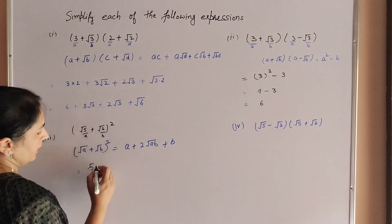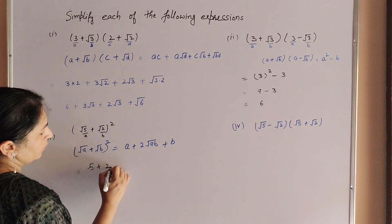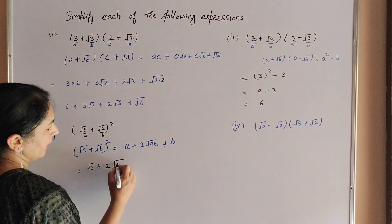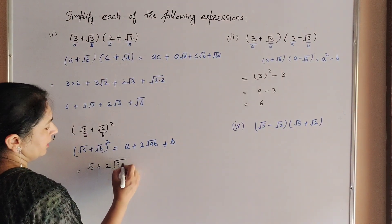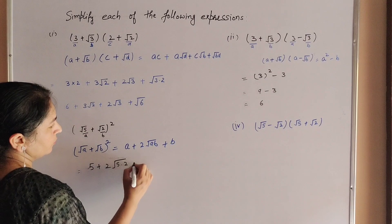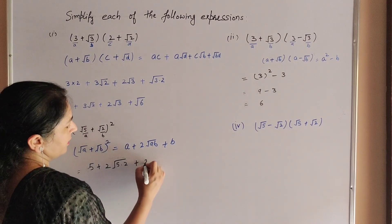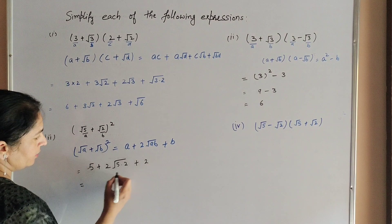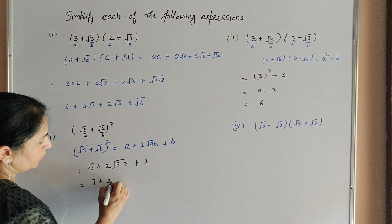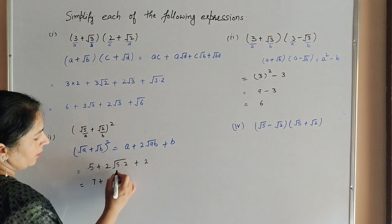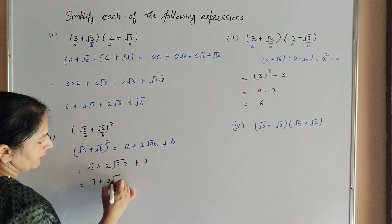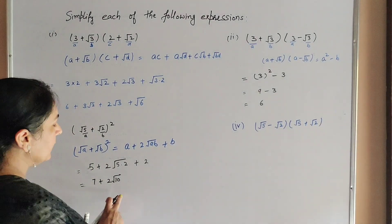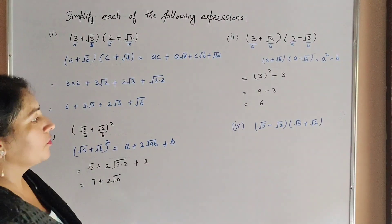Applying the identity: a = 5, plus 2√(ab) = 2√(5×2) = 2√10, plus b = 2. So 5 + 2 = 7, and the answer is 7 + 2√10.